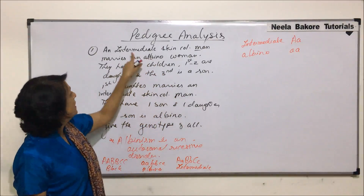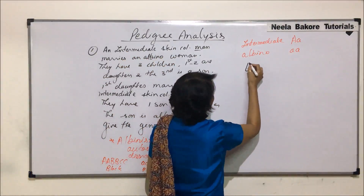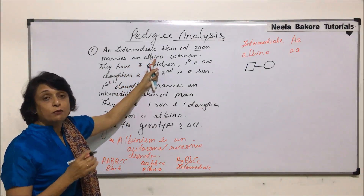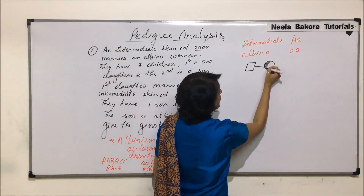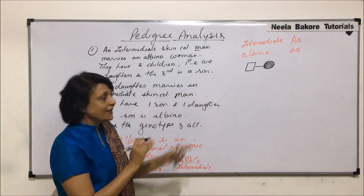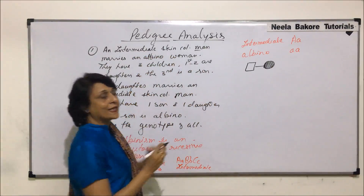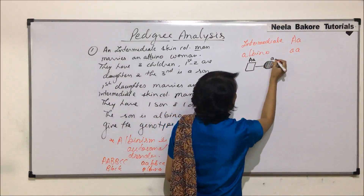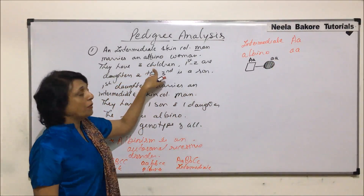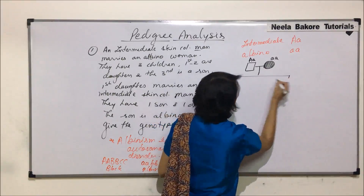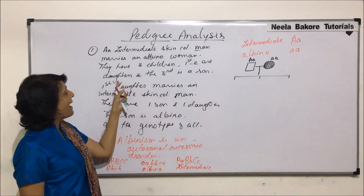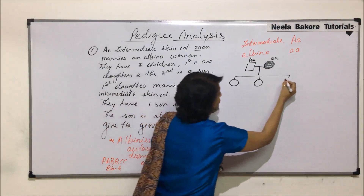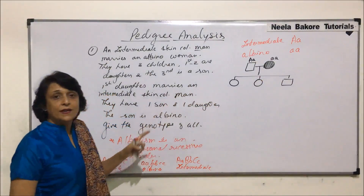An intermediate skin-colored man — so our pedigree starts with the male — marries an albino woman. We are trying to trace albinism, which means this female is affected. This is a normal mating. The male has intermediate skin, so for intermediate we write heterozygous, and for albinism the female is homozygous recessive. They have three children. The first two are daughters and the third is a son, represented using the symbols.